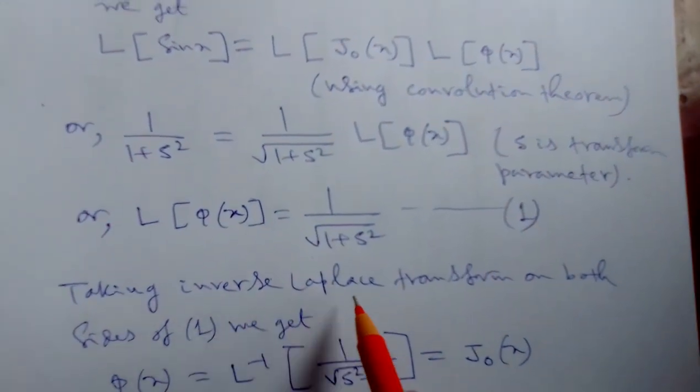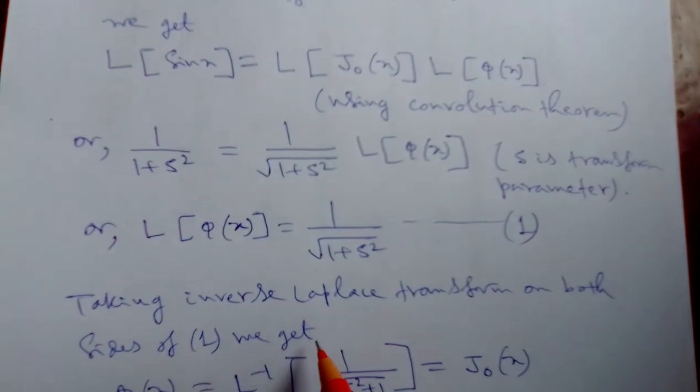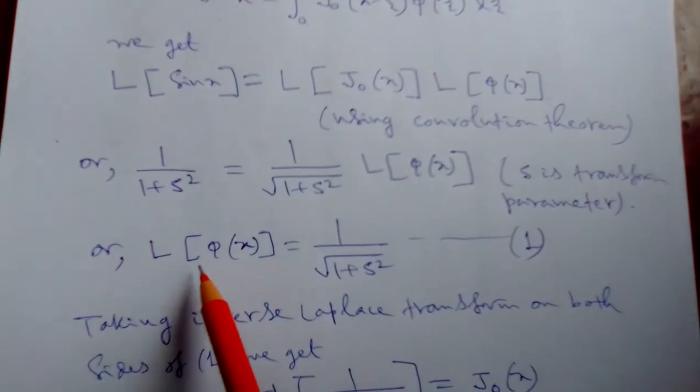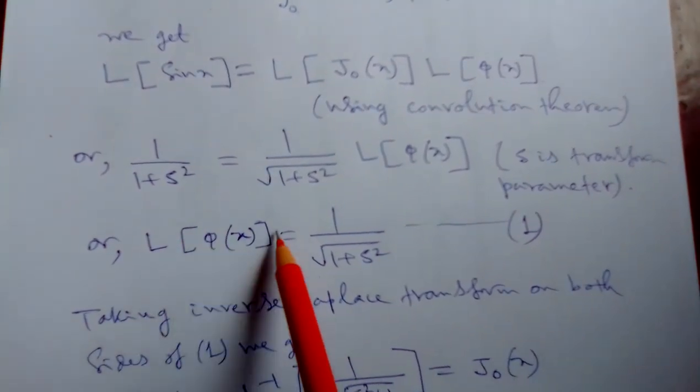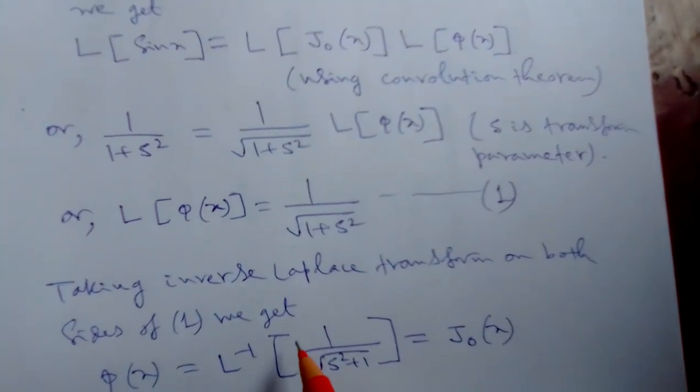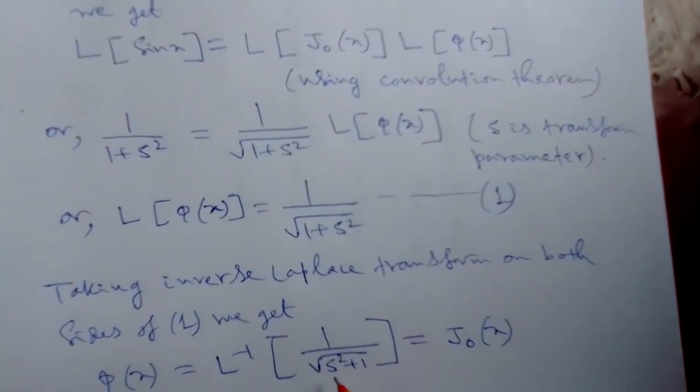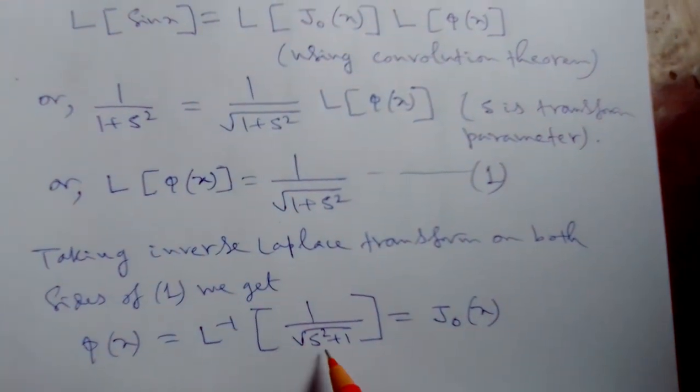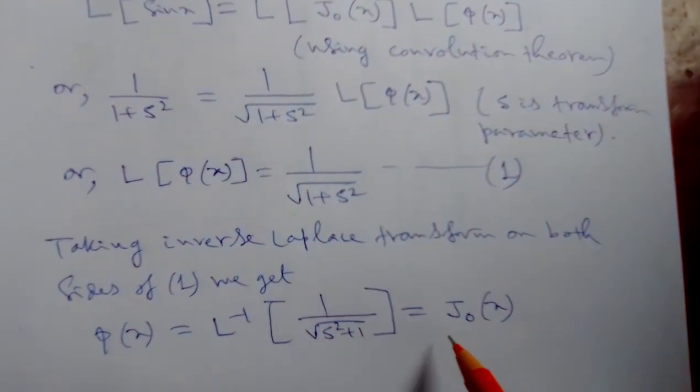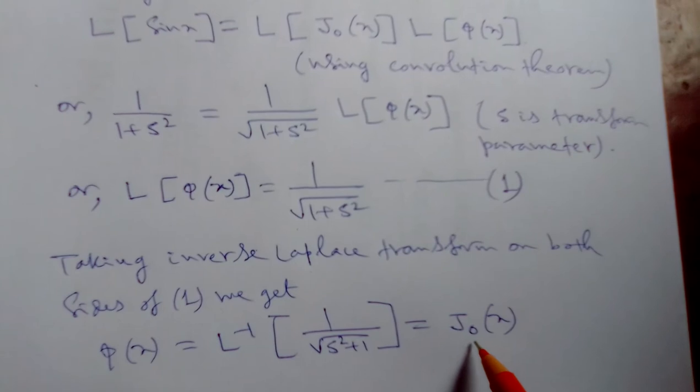Now, taking inverse Laplace transform of both sides of this equation. If we are taking this inverse function of this, we are getting this result of phi(x). So, phi(x) equals L inverse of 1 by root of 1 plus h squared, and suddenly it will be j0(x).